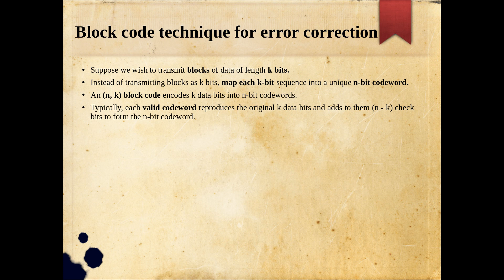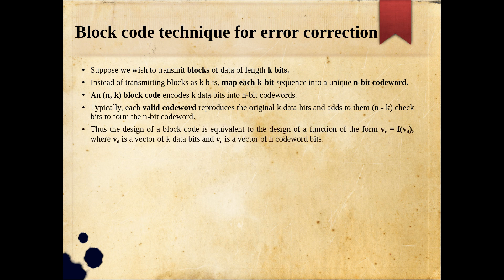Out of the 2^n combinations, the 2^k that correspond to the original block's messages are the valid codewords — those for which we give a valid mapping. The remaining 2^n minus 2^k combinations are invalid. Each valid codeword is produced by appending n minus k check bits to the original k-bit block. The design of a block code is thus equivalent to designing a function: vc = f(vd), where vd is a vector of k data bits and vc is a vector of n codeword bits.